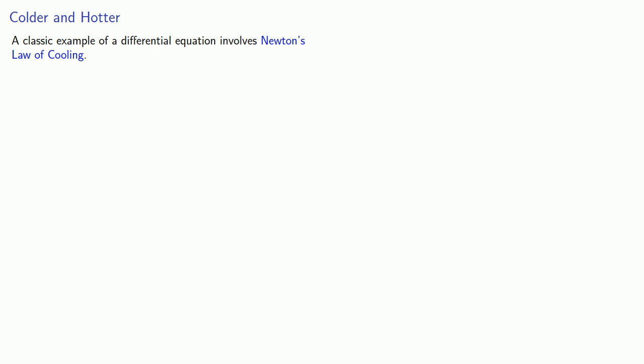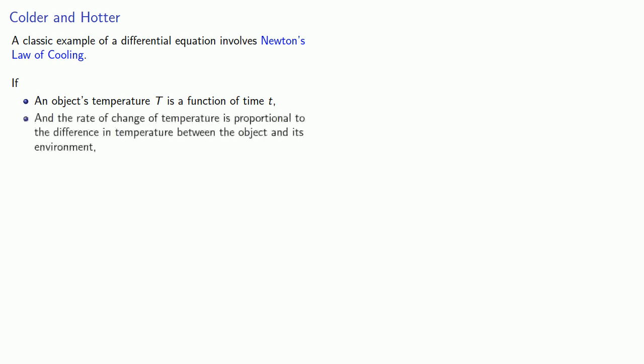We make the following assumptions. If an object's temperature, capital T, is a function of time t, and the rate of change of temperature is proportional to the difference in temperature between the object and its environment, then we can, at least hope to, find the object's temperature T at any time t.